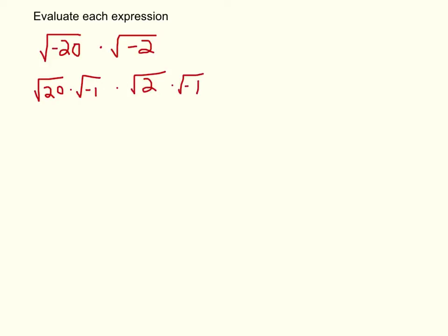Okay, so what I'm going to do is I'm going to rewrite that. I know the square root of negative 1 is i. So I'm going to rewrite that: i square root of 20 times i square root of 2.